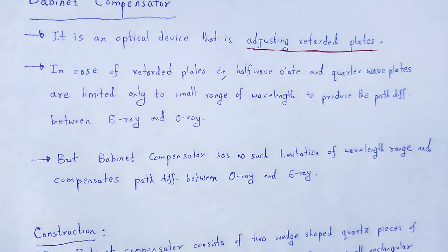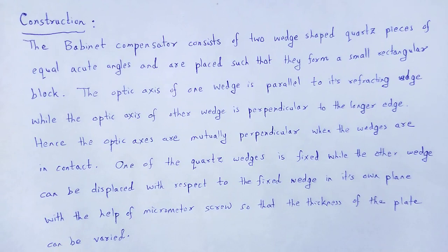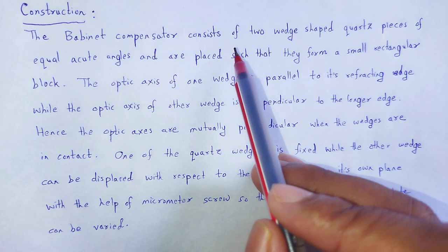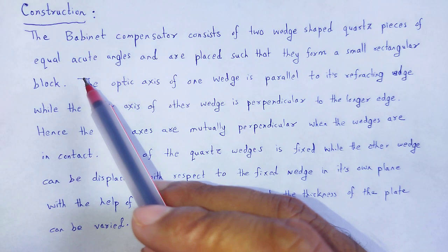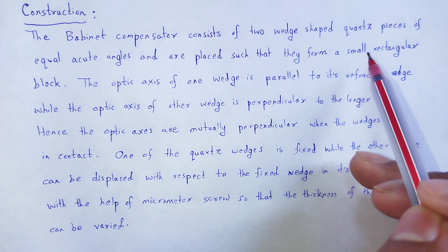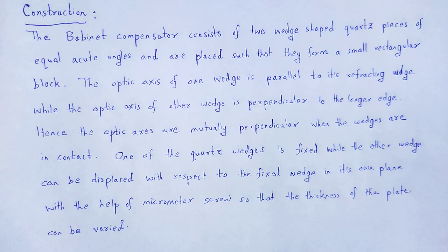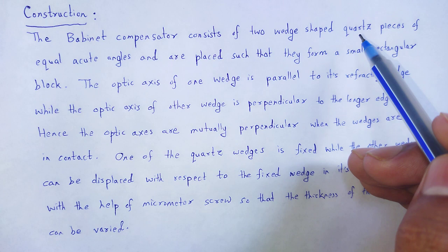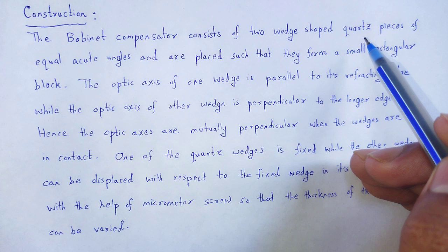Now let's come to the construction part of the Babinet compensator — how we construct this type of optical device. The Babinet compensator consists of two wedge-shaped quartz pieces of equal acute angles, placed such that they form a small rectangular block. Here we prefer wedge-shaped quartz crystal. Quartz crystal is an example of a positive uniaxial crystal.